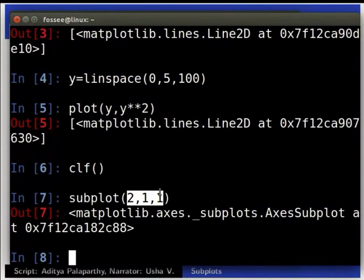The subplot command takes three arguments. The first argument is the number of rows of subplots that must be created. Here, the first argument is 2 to split the plot horizontally. The second argument is the number of columns of subplots that must be created. Here, the second argument is 1.